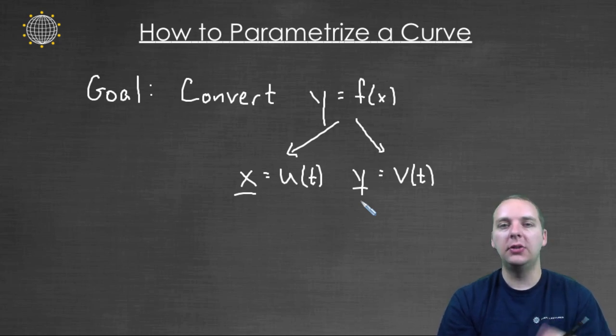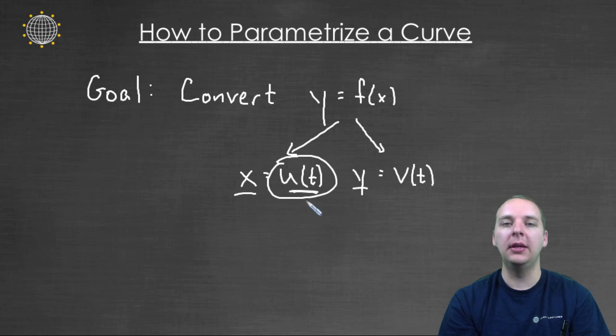There's infinitely many different ways you can parametrize the curve because basically if y is a function of x, you could pick x to be practically anything and then just take all the x's out in your function and replace them with what you've chosen x to be. And then you've got your parametrization for the y part.